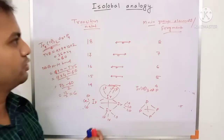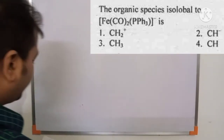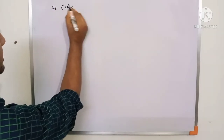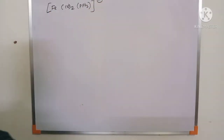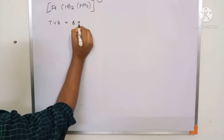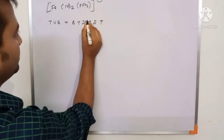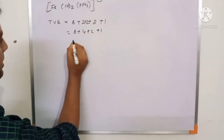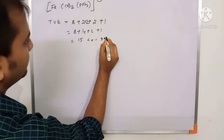Question 1: What organic species is isolobal with Fe(CO)₂(PPH₃)⁻? First, calculate total valence electrons: Fe contributes 8, two CO ligands contribute 4, PPH₃ contributes 2, and the negative charge adds 1 — total = 15 electrons. Since 15-electron transition metal species is isolobal with a 5-electron main group species, we need a 5-electron organic fragment. Options are: A) CH₂⁺, B) CH⁻, C) CH₃, D) CH.